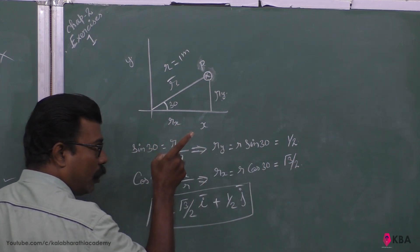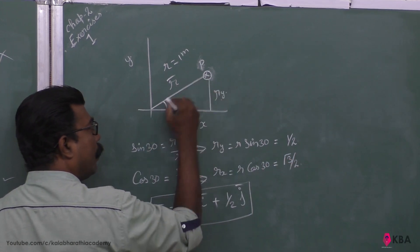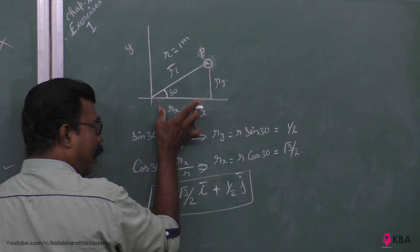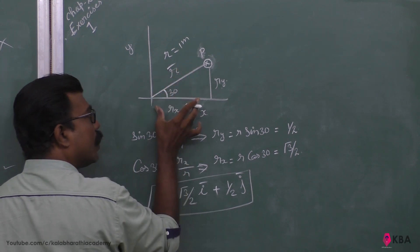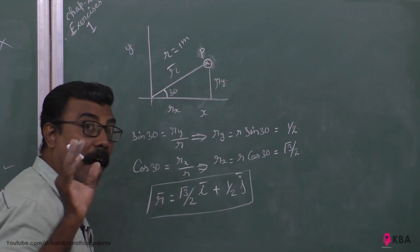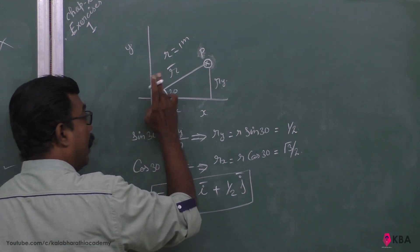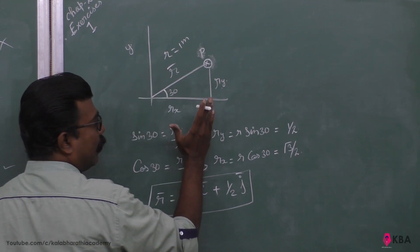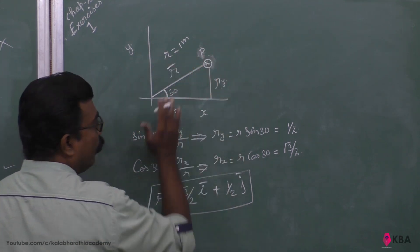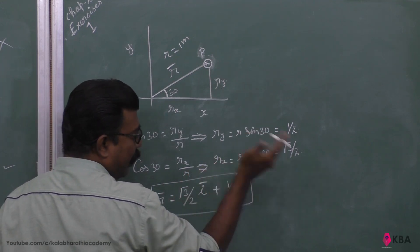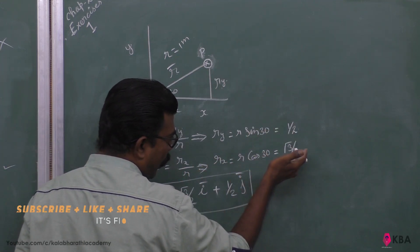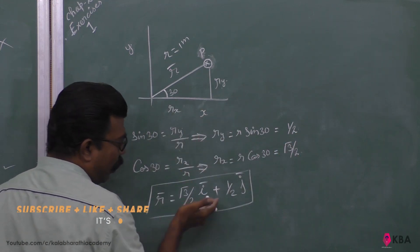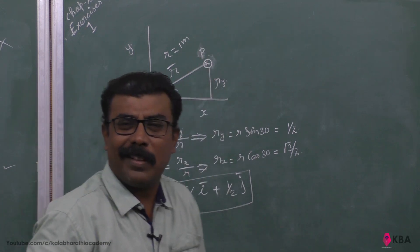To summarize: Rx = cos30 = √3/2, and ry = sin30 = 1/2. So our vector formula is r = (√3/2)î + (1/2)ĵ.